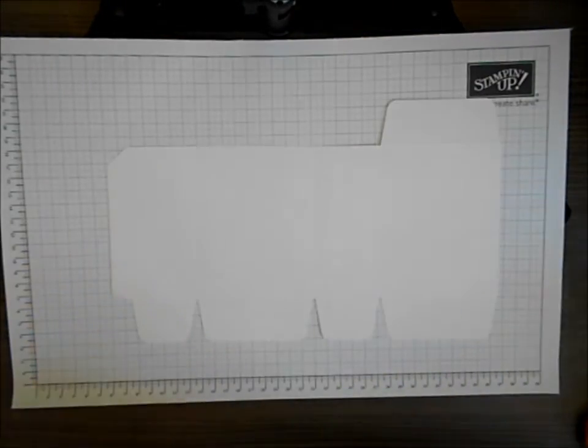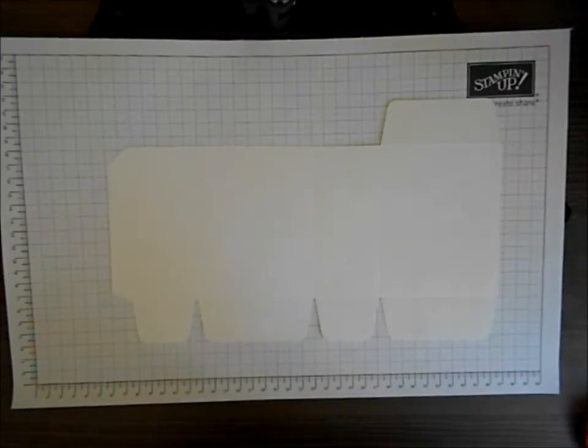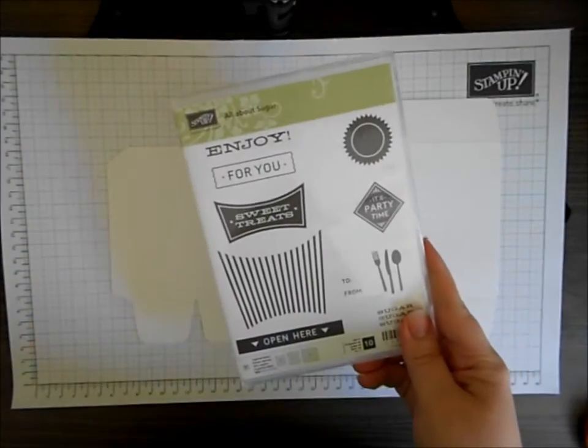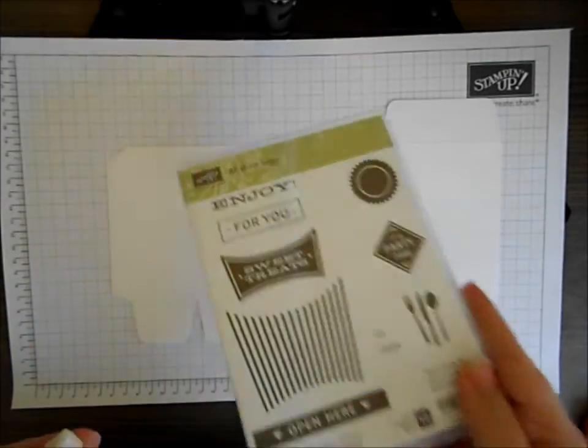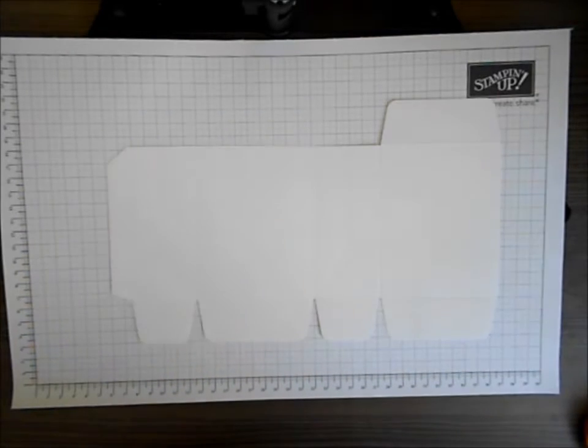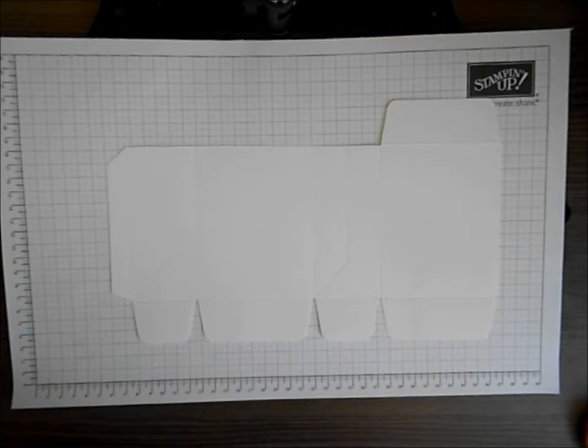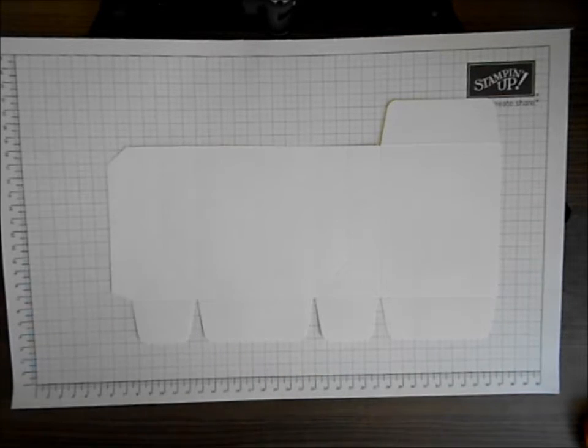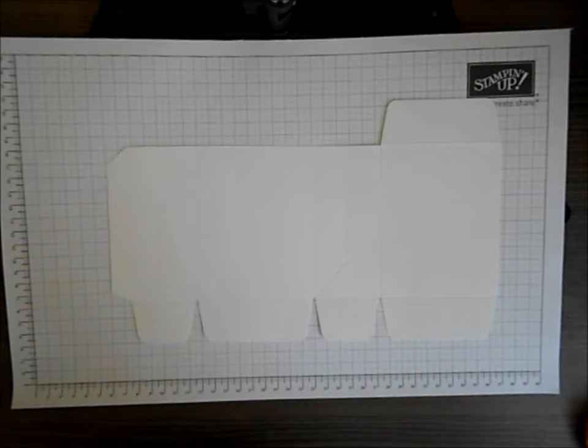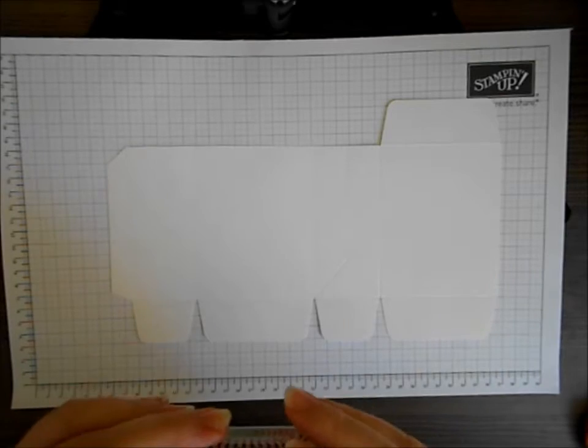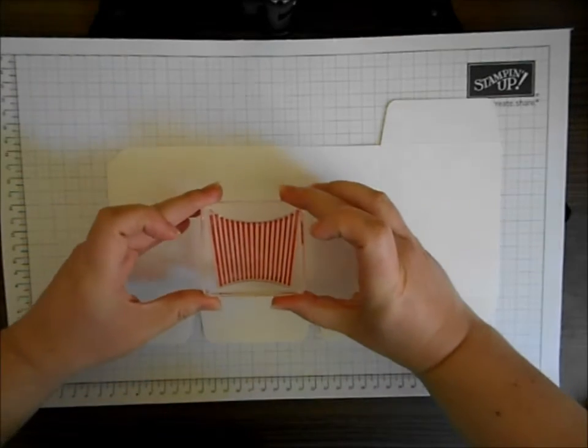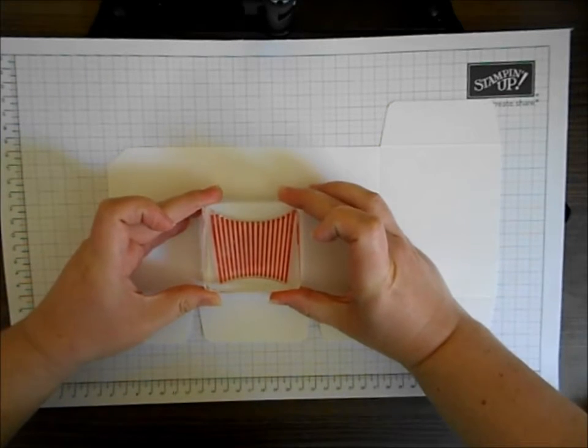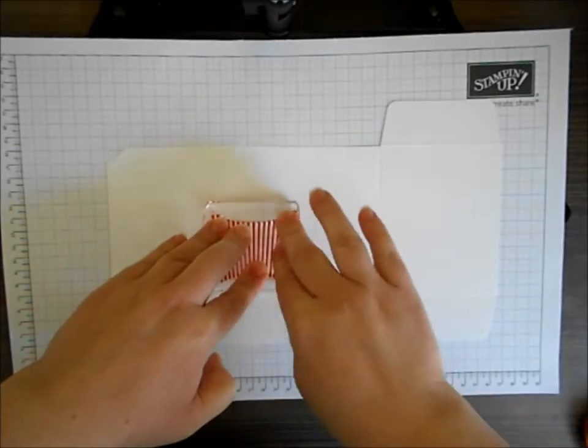So I'm going to stamp on it today. I'm using the All About Sugar stamp set that was new in the annual catalog this year and it's been designed to coordinate with the Fry Box. And if you've watched some of my past videos you'll know that I absolutely love the Fry Box, but I don't think you should limit your stamps to just being what they've been designed for. I'm sure they can all be used in lots of different ways so I'm going to use that stamp set on this bag today.